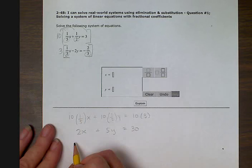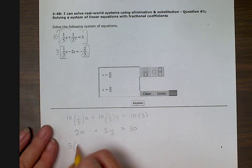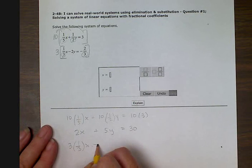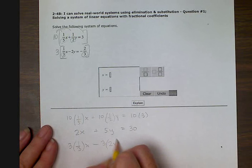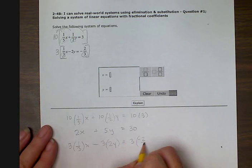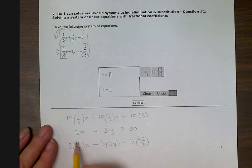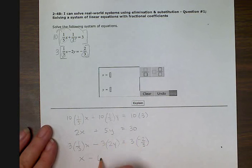Three times one-third x minus three times two y equals three times negative two-thirds. Three times one divided by three gives me one x, and I'm just writing x and not the one, because that is implied right here. Three times two y is six y. And then three times negative two is negative six, divided by three is negative two. That is so much better than this equation.